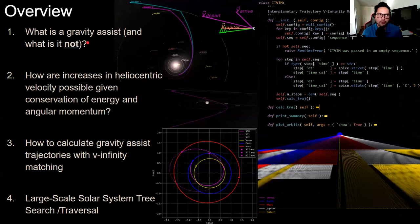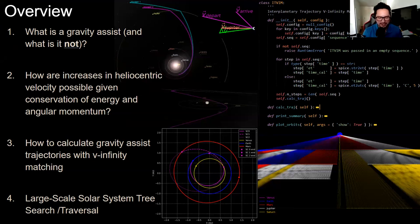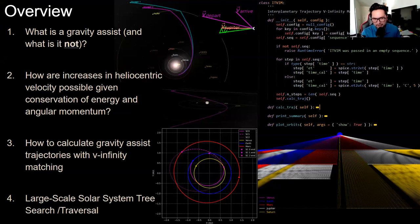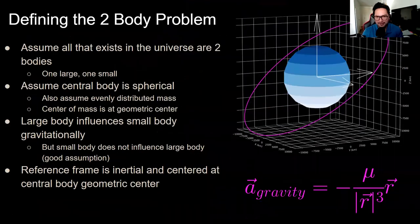This talk is broken down into four sections: the fundamentals of orbital mechanics and what a gravity assist is — basically a hyperbolic flyby of a planet — how increases in heliocentric velocity are possible given conservation of energy and angular momentum, how to calculate gravity assist trajectories using v-infinity matching, and then a higher-level look using graph theory to solve this problem with a large solar system tree, trying every combination of gravity assists across the solar system.